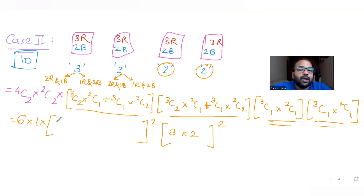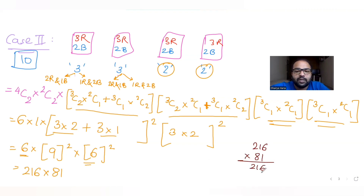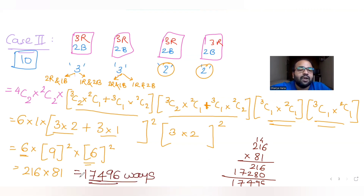Solving: 4C2 = 6. The three-ball bracket: 3C2×2C1 + 3C1×2C2 = 3×2 + 3×1 = 6 + 3 = 9; squared gives 81. The two-ball bracket: 3C1×2C1 = 3×2 = 6; squared gives 36. So Case 2 = 6 × 81 × 36 = 6 × 2916. That gives 17,496 ways in Case 2.